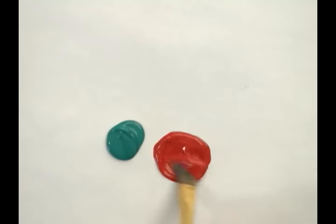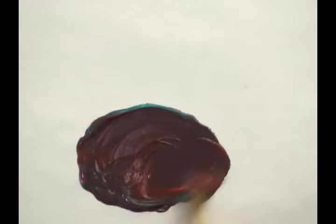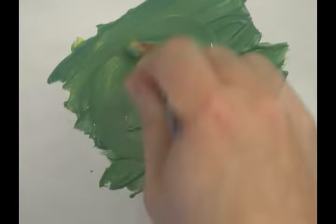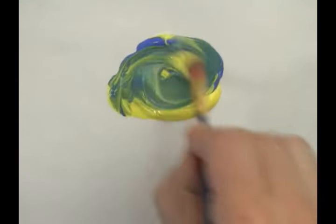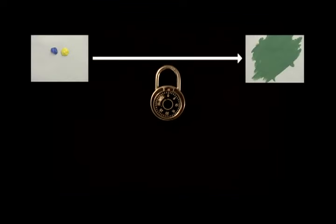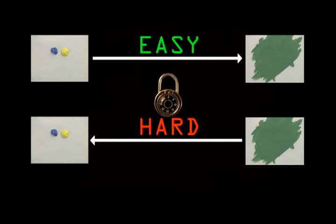The trick is based on two facts. One, it's easy to mix two colors together to make a third color. And two, given a mixed color, it's hard to reverse it in order to find the exact original colors. This is the basis for a lock — easy in one direction, hard in the reverse direction. This is known as a one-way function.